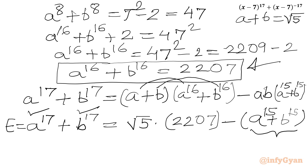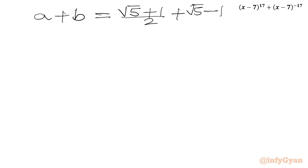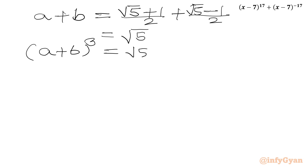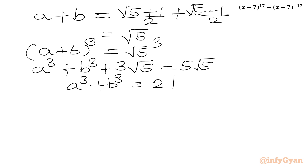A + B = √5. Cubing both sides: A³ + B³ + 3·AB·(A + B) = 5√5. Since AB = 1 and A + B = √5: A³ + B³ + 3√5 = 5√5, so A³ + B³ = 2√5.